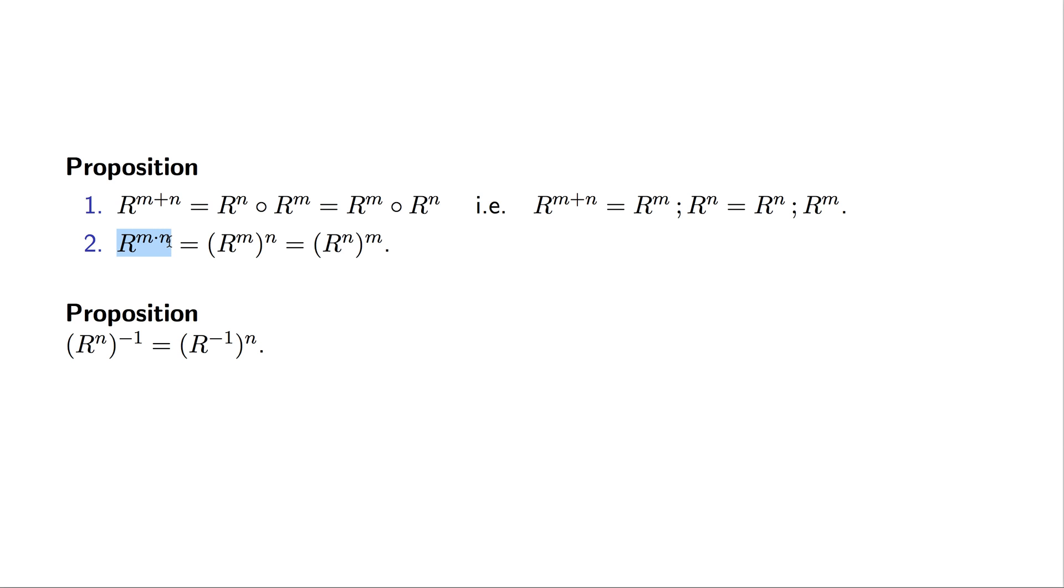R to the power of m times n can be obtained as the mth power of R raised to the nth power, or alternatively, the nth power of R raised to the mth power.